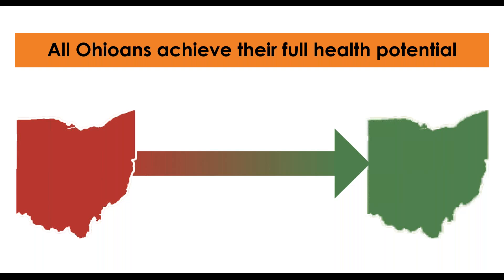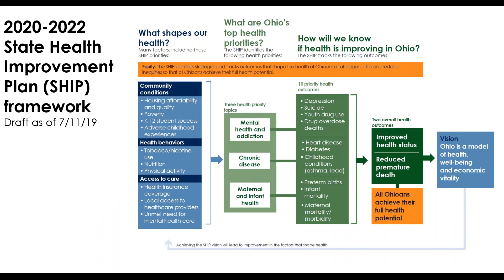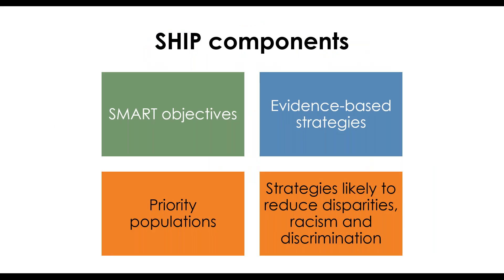Now we'll take a look at the SHIP framework guiding our work. This is the latest version. It looks different from the previous framework — we've made changes to put a stronger focus on community conditions and other factors, simplified some language, and elevated equity. The red box in the bottom left shows where the access to care piece fits in with this overall framework. The main components of the SHIP are SMART objectives — specific and measurable — priority populations, which are groups with the worst health outcomes, and evidence-based strategies to reduce disparities, racism, and discrimination. Today we're focusing on SMART objectives and priority populations.